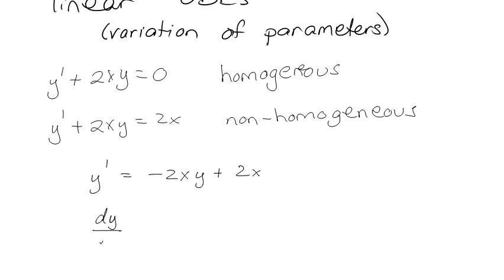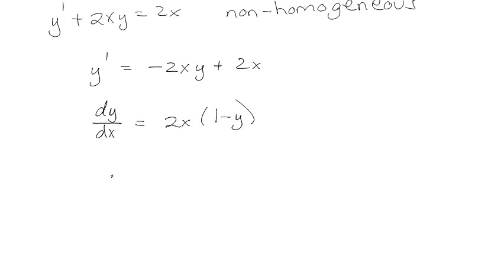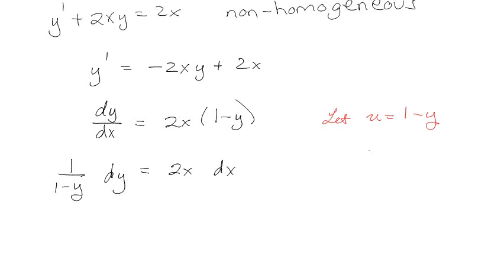Let's do dy/dx on the left, and on the right I'll say 2x times (1 minus y) minus 6x. This is actually separable, so it's no longer purely linear but at least it's separable. To do the integration on the left, I'll either have that memorized or work it out. With the u-substitution, I'll let u equal 1 minus y, so du equals minus dy, or dy equals negative du.